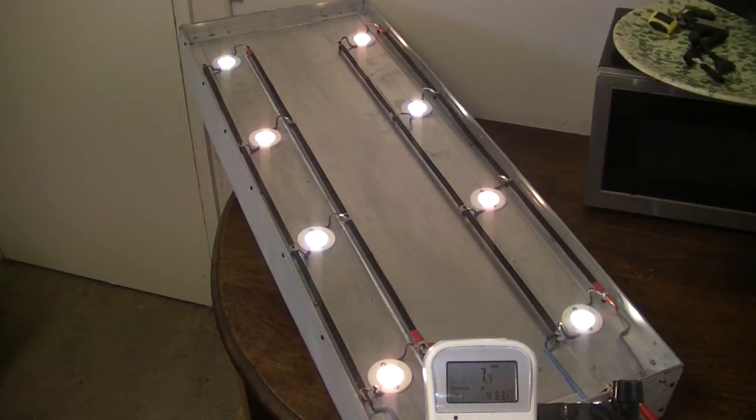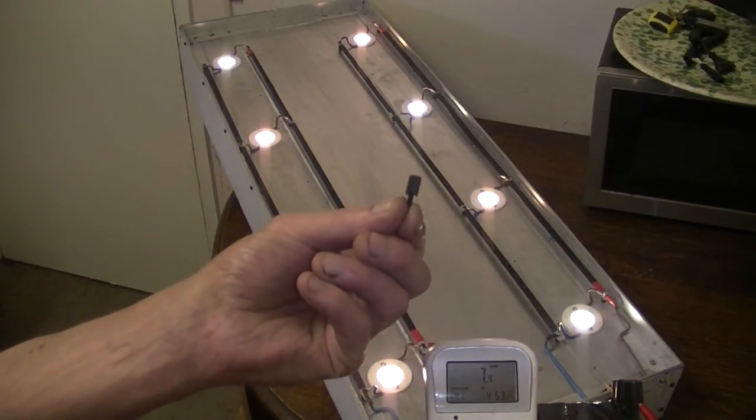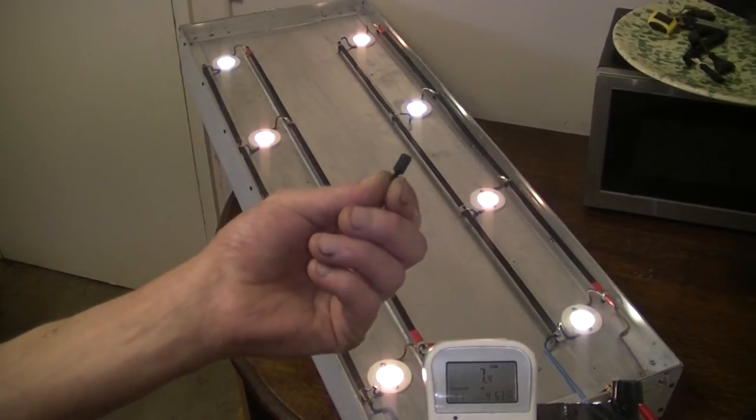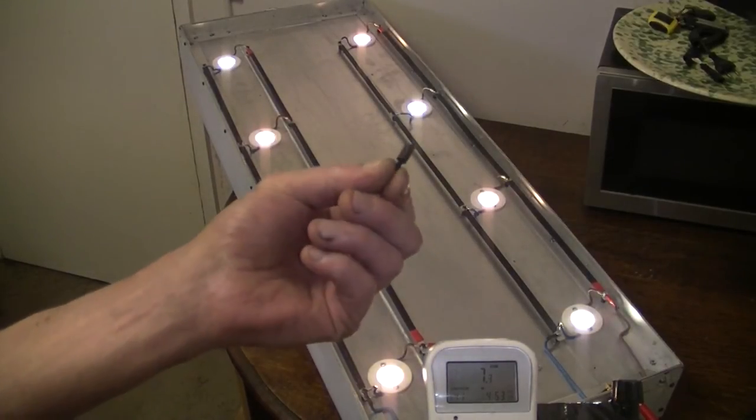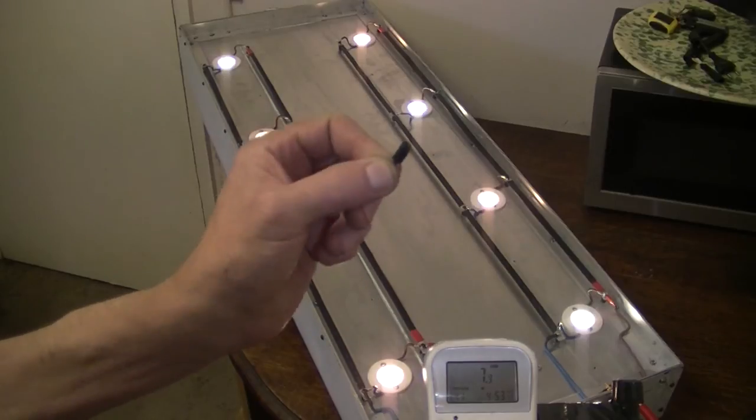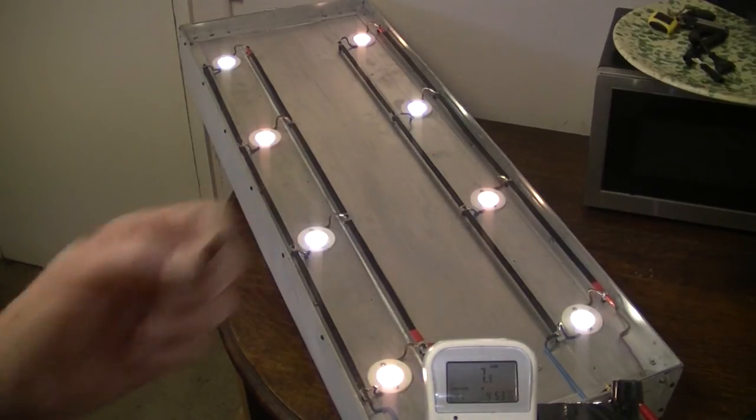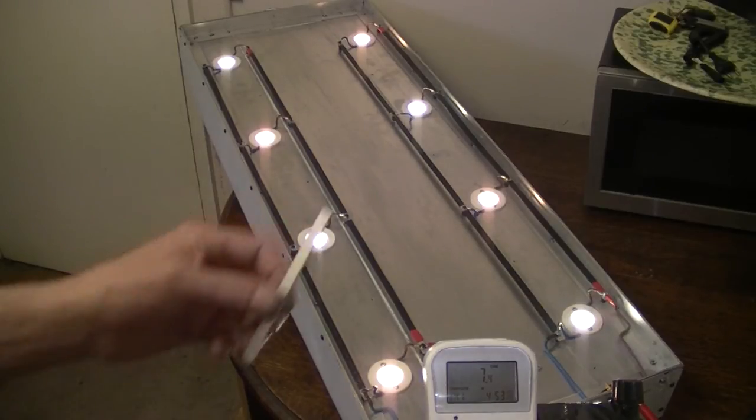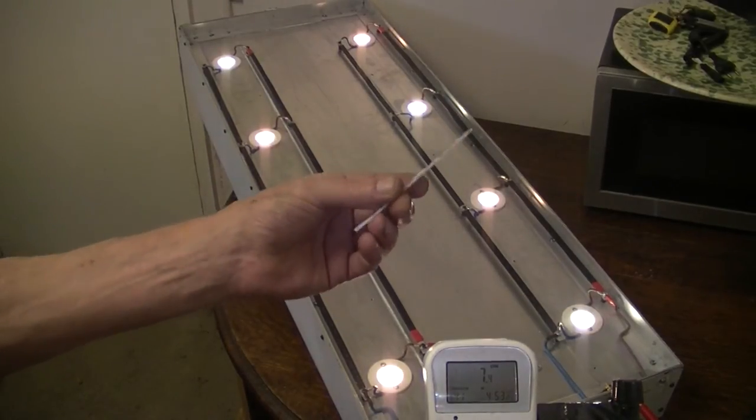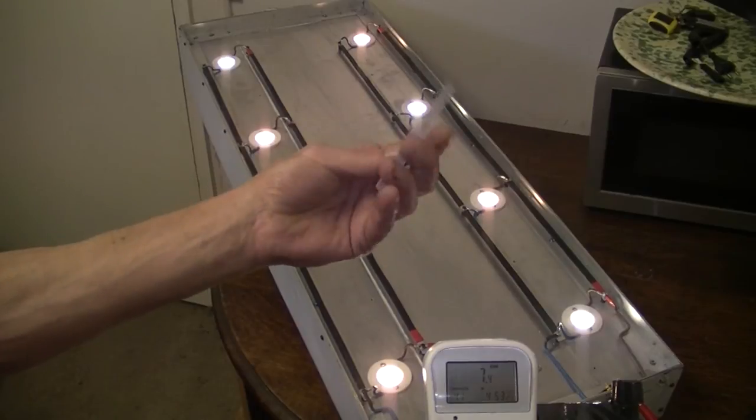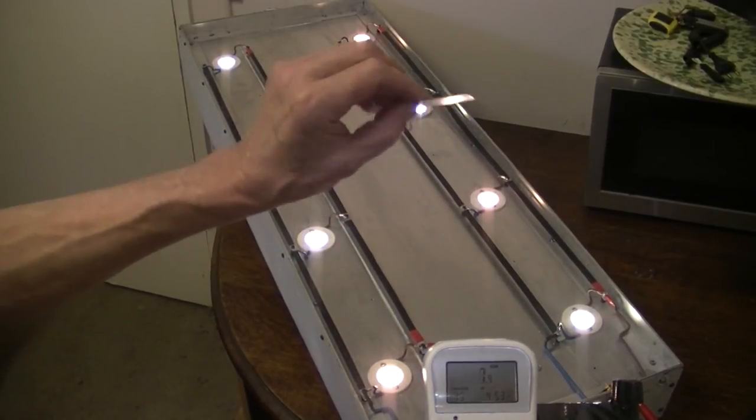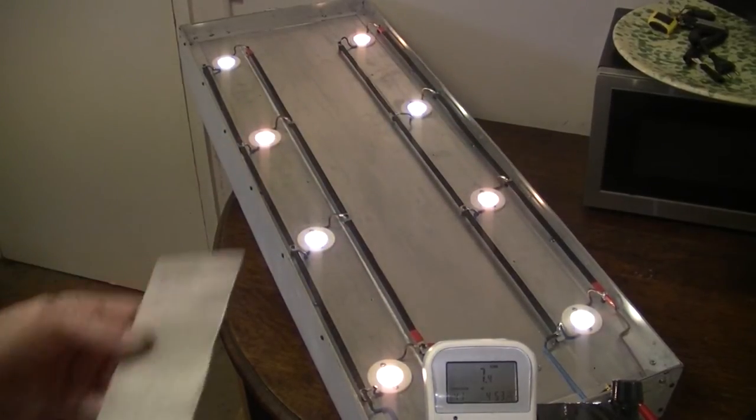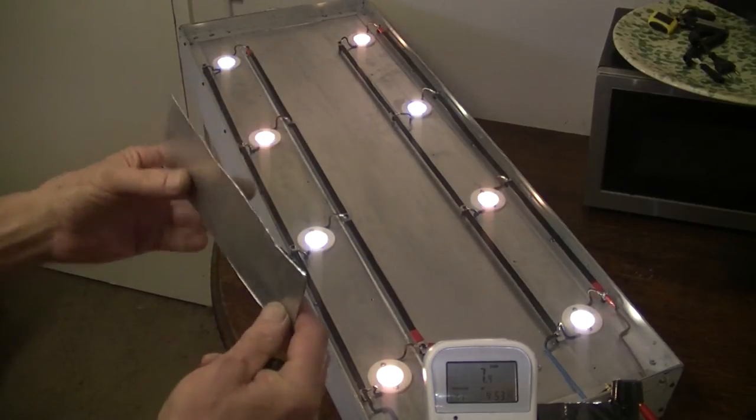Another detail - the bus bars are held off the heat sink by plastic standoffs tapped and threaded into the heat sink for insulation. The bus bars themselves are seven mil offcut from my casing material, which is seven mil bright alloy sheet.